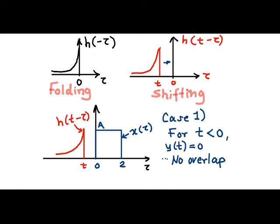In the first case we could see that for t less than 0, both signals don't overlap. Therefore the output of convolution remains 0 as we start shifting h(t - τ) over x(τ).